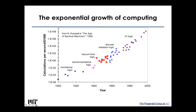Before delving into the example of strain silicon, it's important to understand the main paradigm that's been driving a lot of advancement over hundreds of years. What I'm showing here is the year on the x-axis and a metric called calculations per second per thousand dollars — basically how much it costs to do a calculation. This is from one of Kurzweil's extrapolations over the ages.